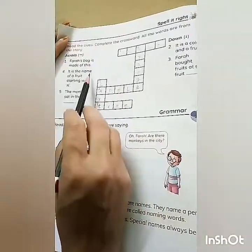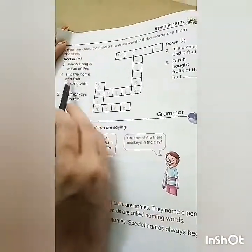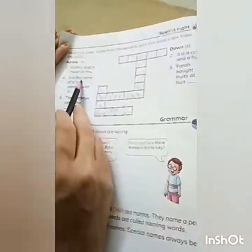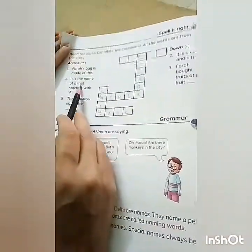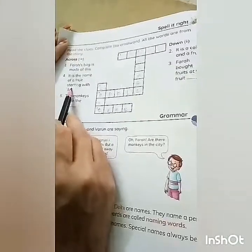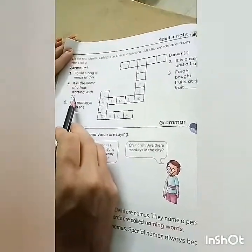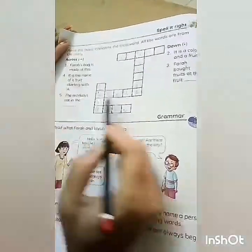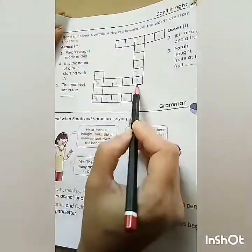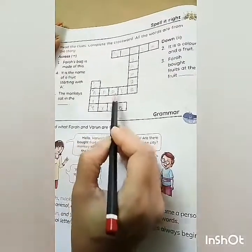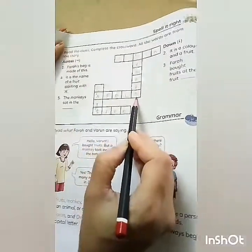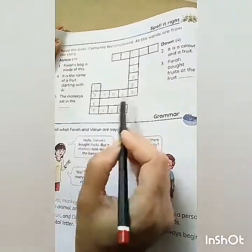Fourth one, across. It is the name of a fruit starting with A. So which fruit starts with A? Apple. A-P-P-L-E. Apple.